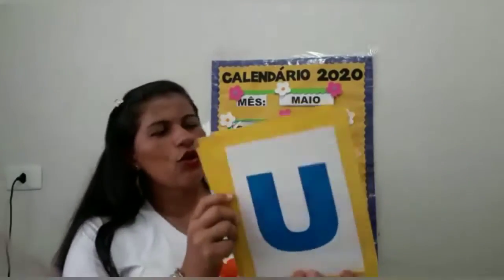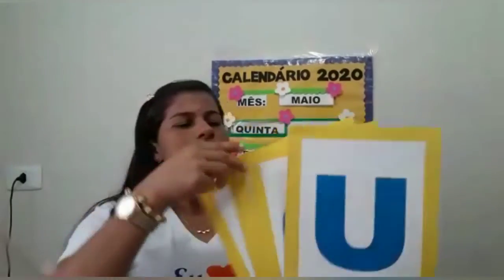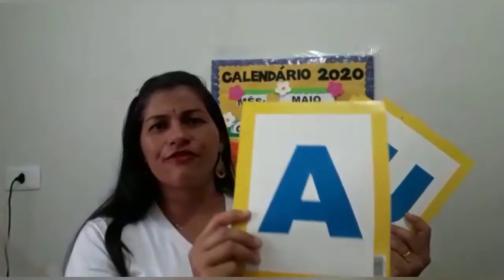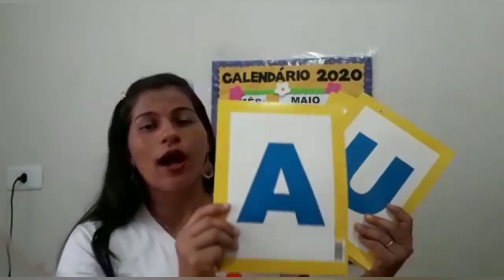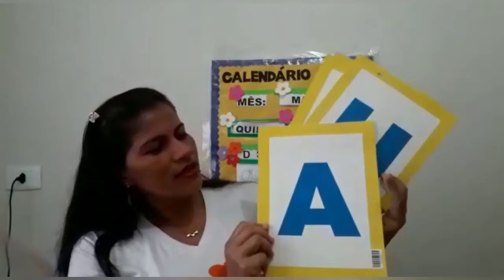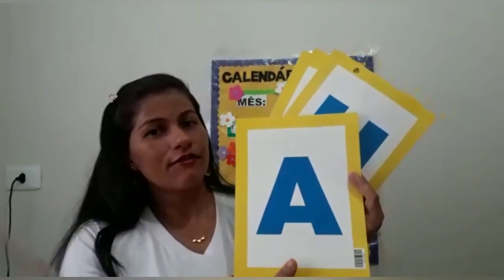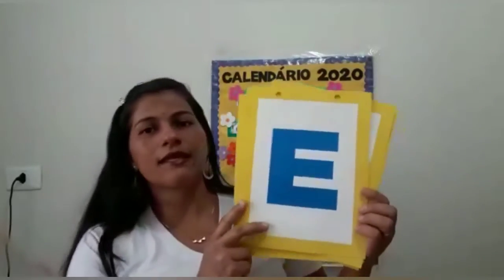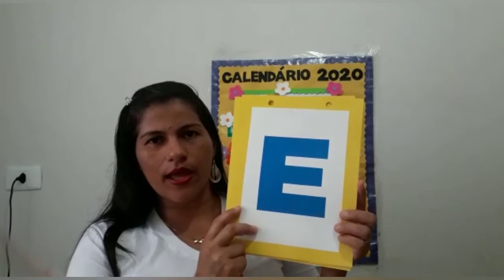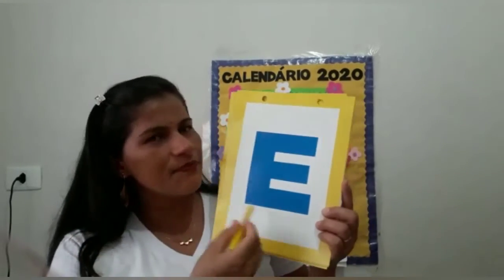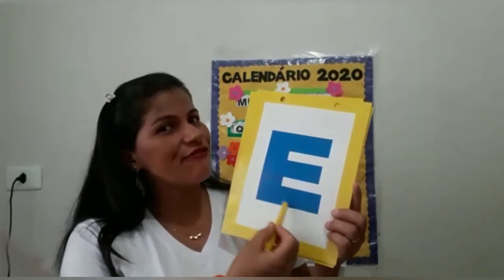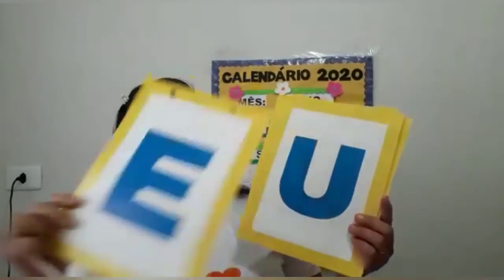Muito bem! Então, no nosso alfabeto nós temos cinco letrinhas que são as vogais. Nós temos o A — de abelha, avião, Ana, Augusto, Anne, Arthur. Nós temos a vogal A, que tem várias palavrinhas que se escrevem e se iniciam com ela. Nós temos a vogal E, que também existem muitas palavras que se iniciam com essa vogal — como, por exemplo, Elise, estrela, escada, Ester, elefante. Muitas palavrinhas com a vogal E.